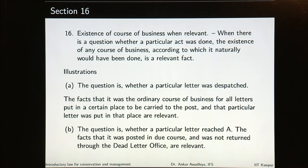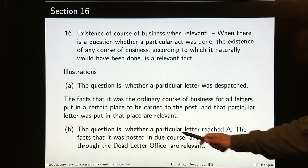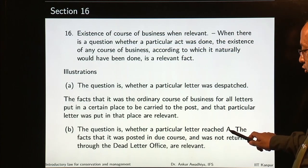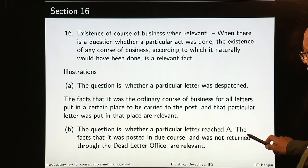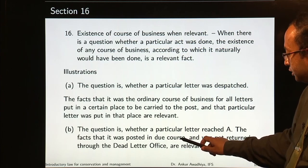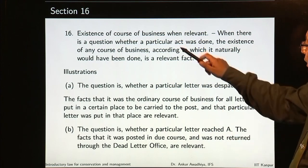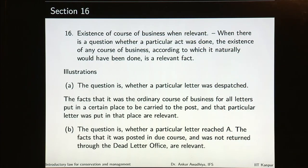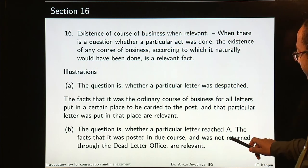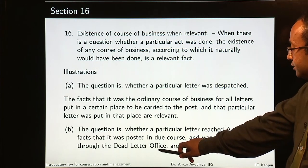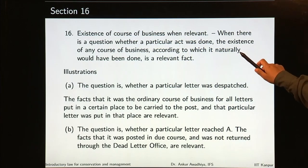Section 16: existence of course of business when relevant. When there is a question whether a particular act was done, the existence of any course of business according to which it naturally would have been done is a relevant fact. For example, the question is whether a particular letter reached A. The fact that it was posted in due course and was not returned through the dead letter office is relevant — naturally, if the letter did not reach A it would have been returned, and since it did not come back, the court would presume the letter actually reached A.